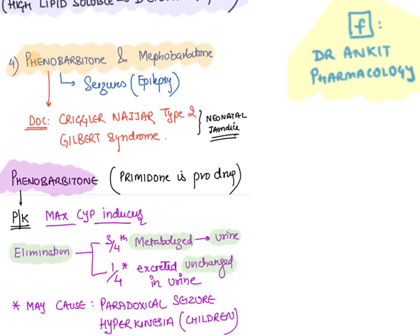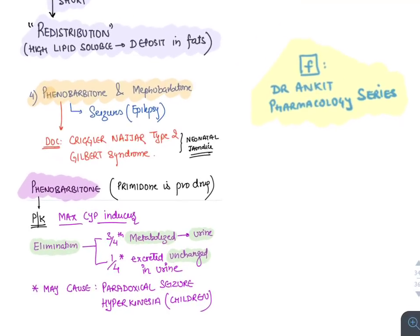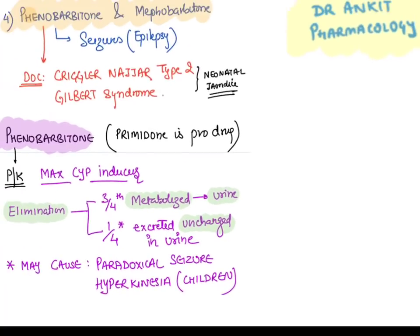Phenobarbitone is a long-acting barbiturate used for prevention of seizures, making it an anti-epileptic drug. It is also an enzyme inducer — it induces UDPGT enzyme in the liver. Because of this, phenobarbitone is the drug of choice for neonatal jaundice (Crigler-Najjar syndrome type 2 and Gilbert syndrome), where UDPGT levels are very low and bilirubin cannot be conjugated.